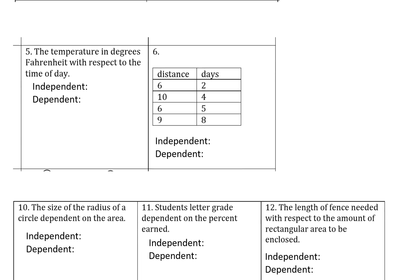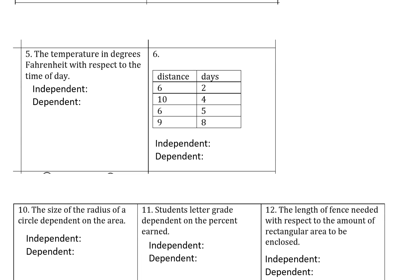All right, so continuing on, number five: the temperature in degrees Fahrenheit with respect to the time of day. So our independent is time and our dependent is temperature in degrees Fahrenheit. So at every time of day there's only one temperature that is the temperature outside. So this is certainly a function.